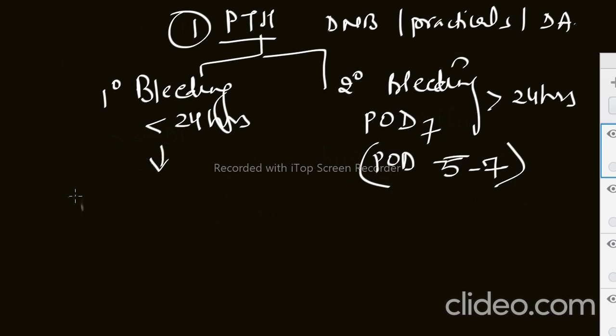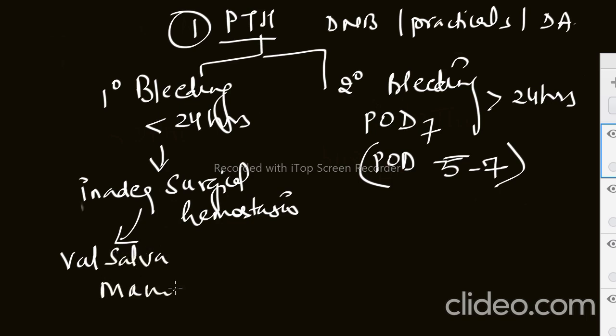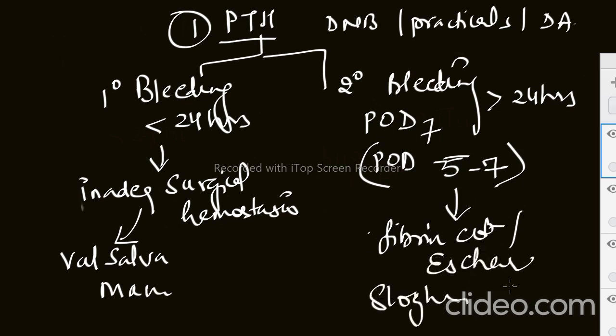The next question they will ask: what are the causes? Why is it happening? Primary bleeding happens because of inadequate surgical hemostasis so they can check the bleeding points. For secondary bleeding, the reason is when the fibrin clot or eschar sloughs off the tonsillar bed.